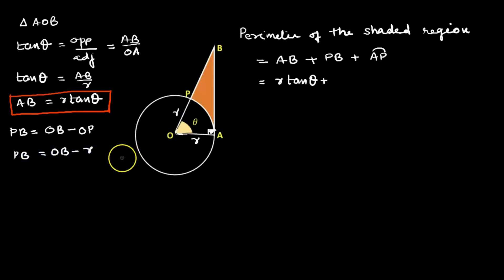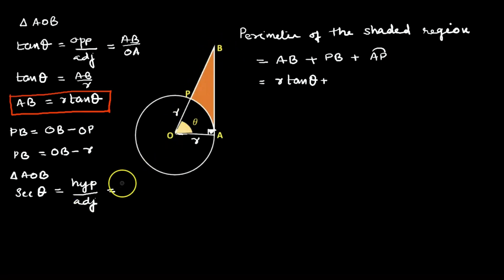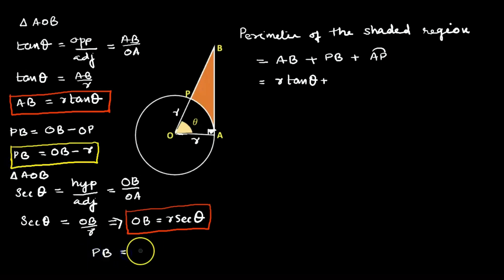Now we have to get the value of OB. In triangle AOB, sec θ equals hypotenuse by adjacent, which is OB by OA. Since OA is the radius, sec θ equals OB by r. Therefore OB equals r sec θ. Now let's substitute this OB value in PB: PB equals r sec θ minus r.